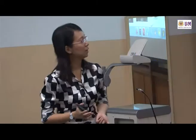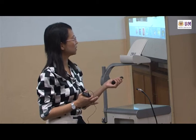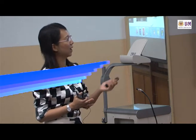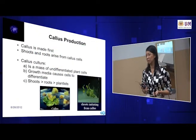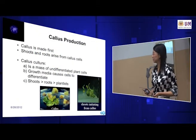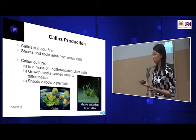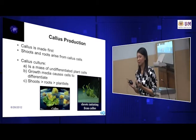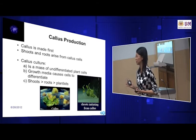These are callus — callus undifferentiated cells. Shoots can come out from callus if we give them the right media and the right hormone — in this case, it will be cytokinin. If we give it a lot of auxin, then roots will come out from the callus. So basically we are inducing the callus to differentiate into different types of tissue cells and organs.